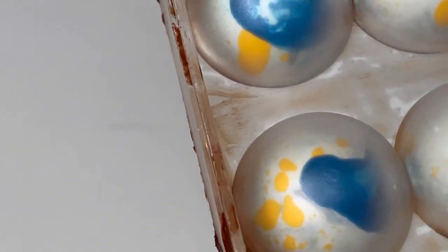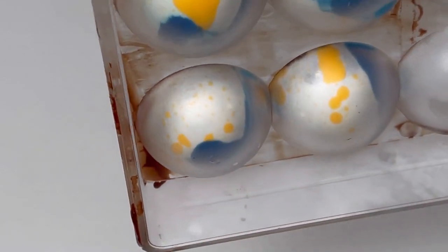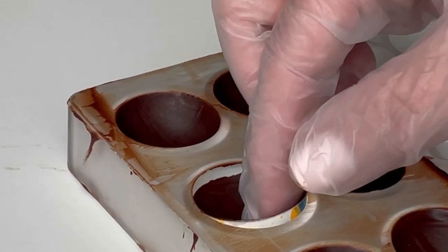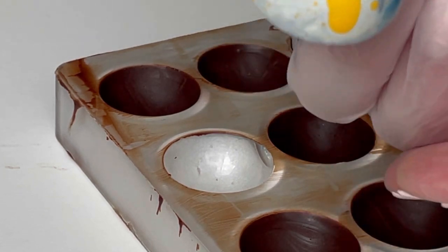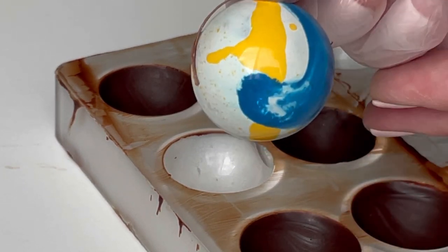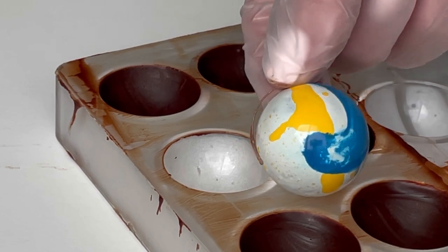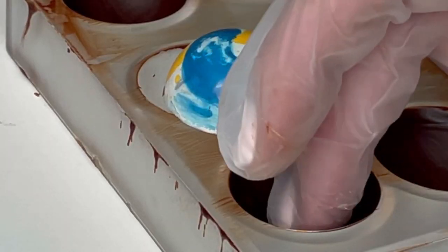When you see the chocolate contract away from the mold, you know they're ready to be popped out. At this point, you would actually fill your chocolate with something like a salted caramel and then seal it back up with more tempered chocolate, but we'll save that for another video.